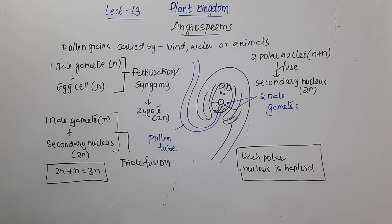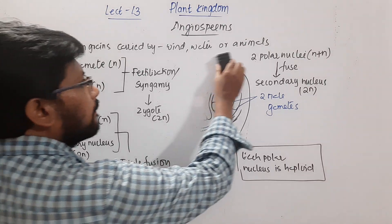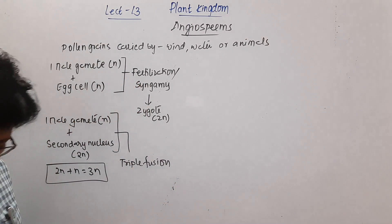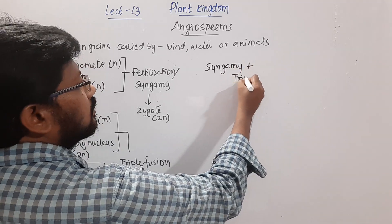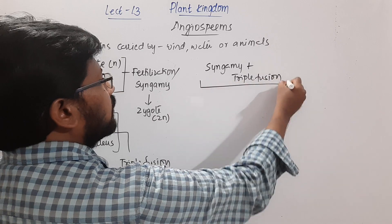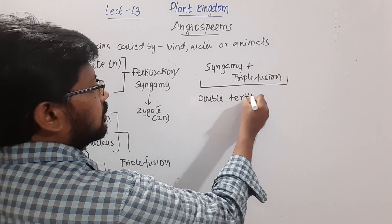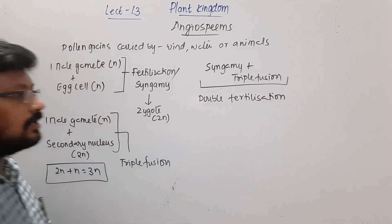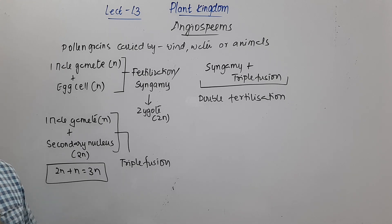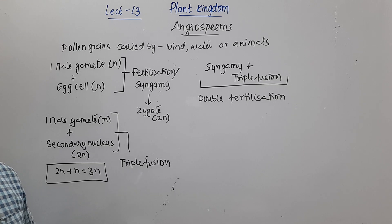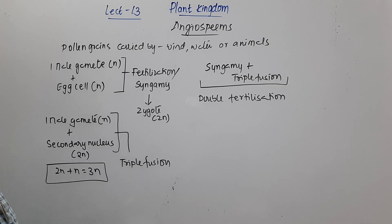Syngamy and triple fusion together are referred to as double fertilization. Double fertilization is a unique character of angiosperms — it is not found in algae, bryophytes, pteridophytes, or gymnosperms. No other group of plants has this phenomenon called double fertilization; it is present only in angiosperms.